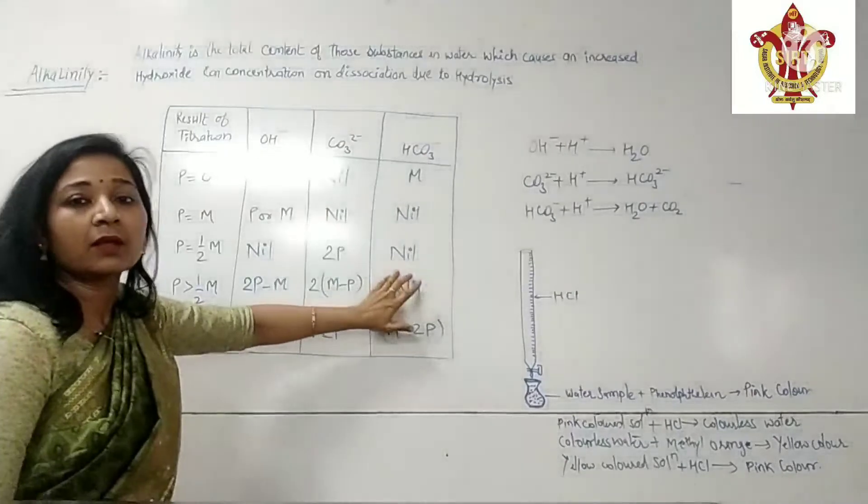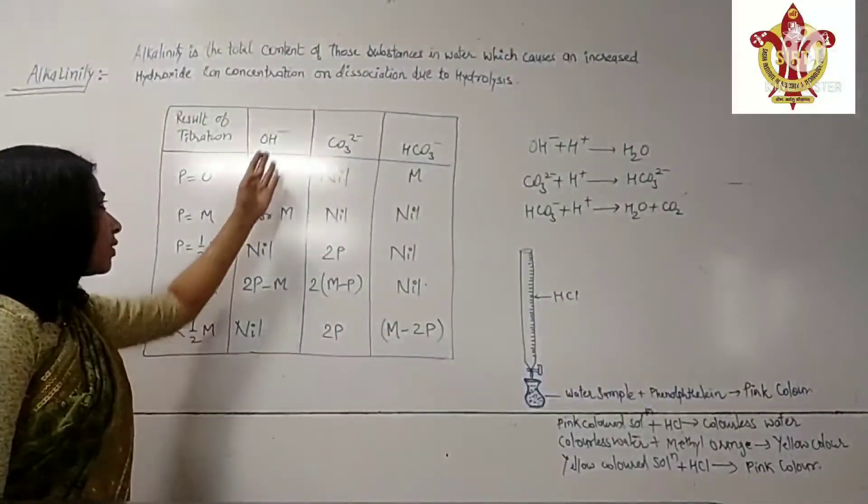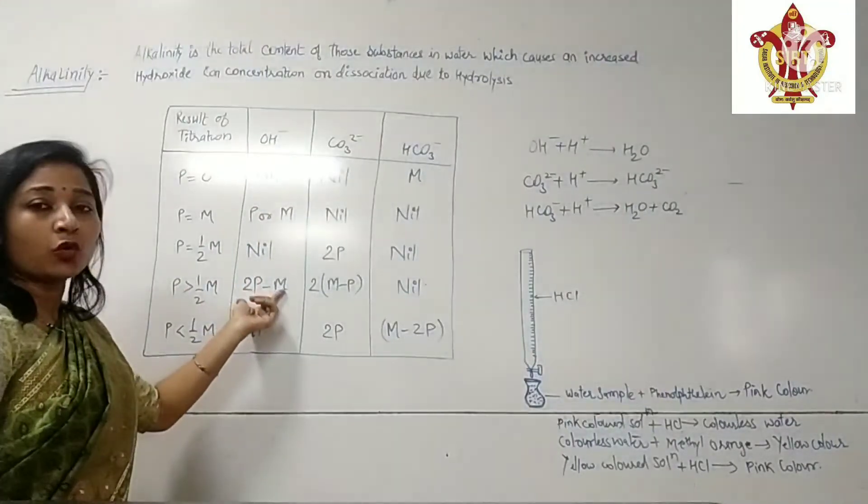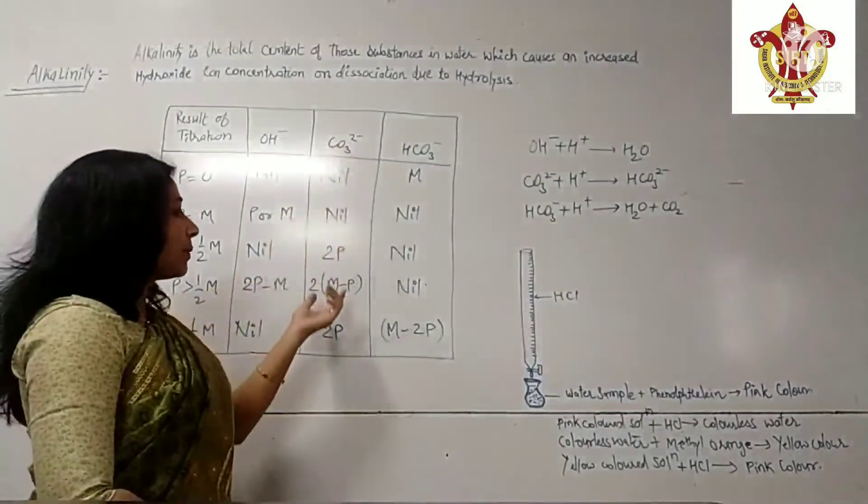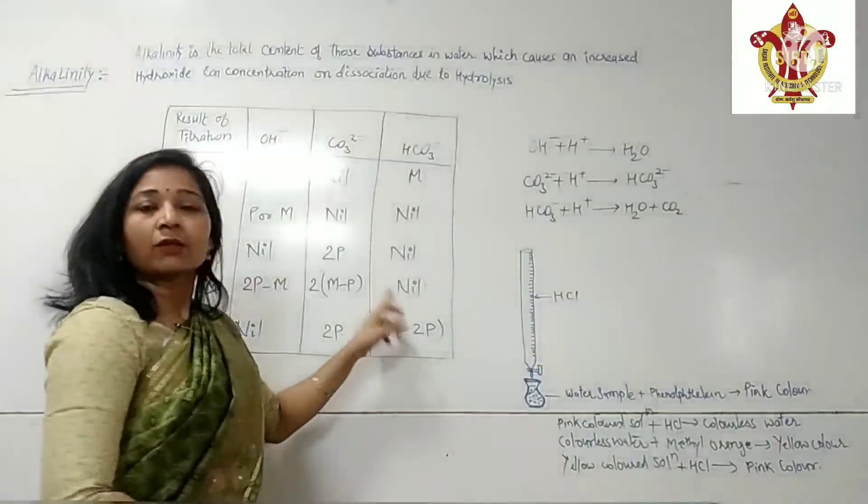When P is greater than half M, OH ion present hoga, uski value hogi 2P minus M. Carbonate ion present hoga, uski value hogi 2M minus 2P. And bicarbonate is nil or absent.